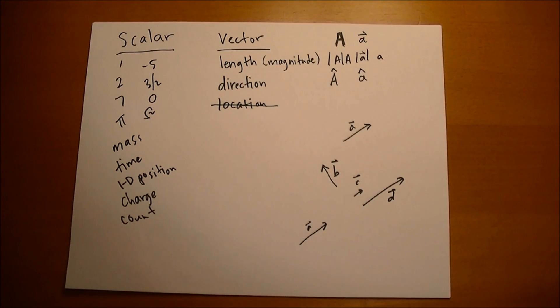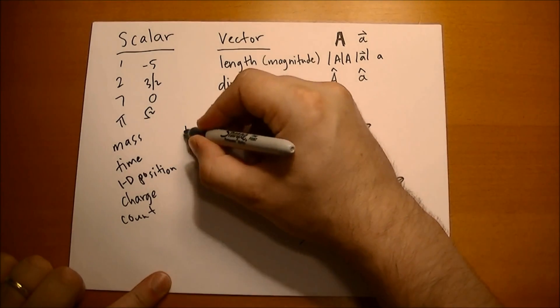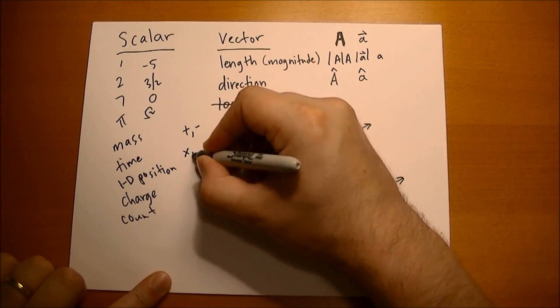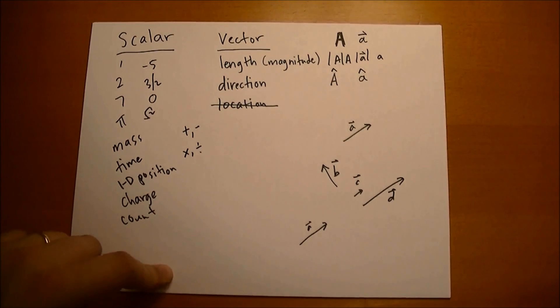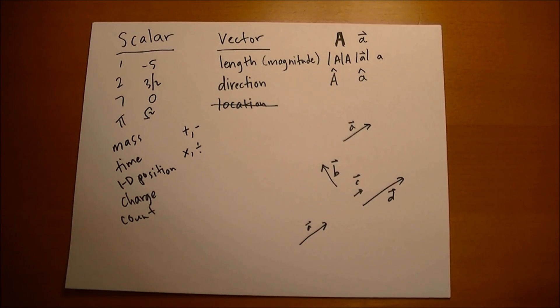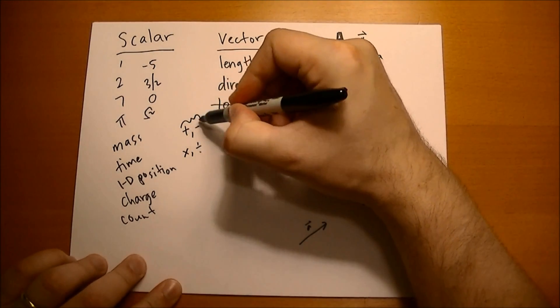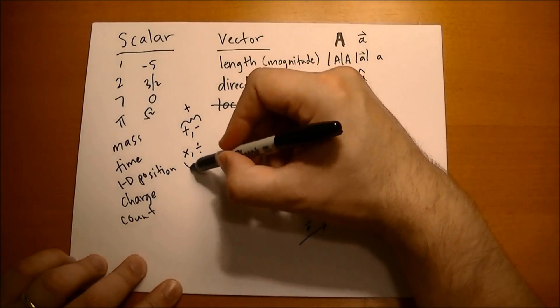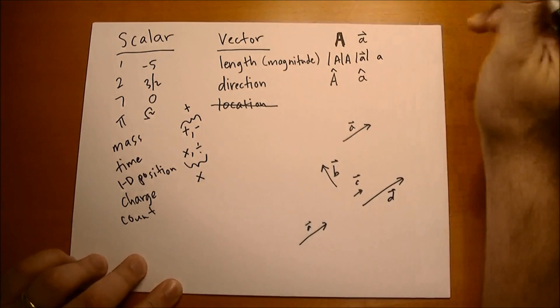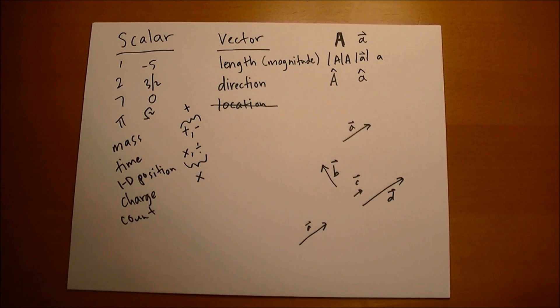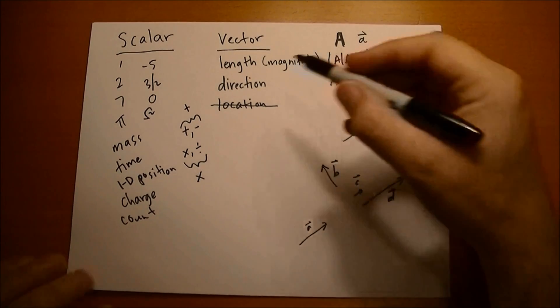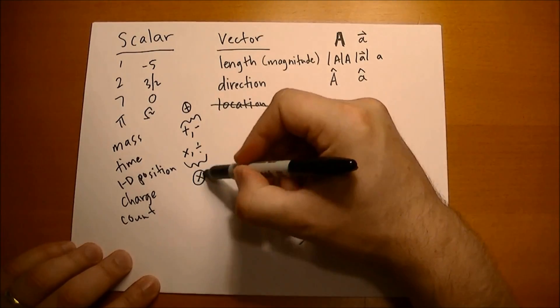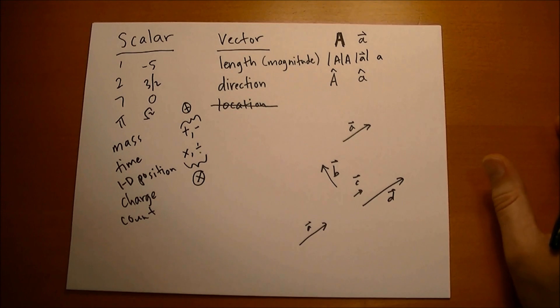With scalars we can add, we can subtract, we can multiply, we can divide. As you probably learned through algebra, adding and subtracting is really just adding the negative, and dividing is really just multiplying by a fraction. So there's really two operations that you can do with scalars: there's addition and there's multiplication.